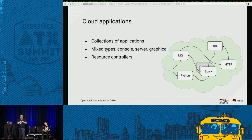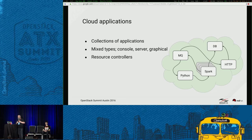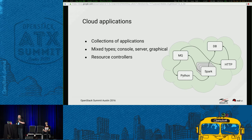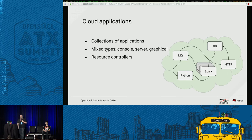When we look at cloud applications, this diagram shows what I think about when putting together an application that lives on the cloud. It's really a collection of applications. There may be mixed types: console applications to inject commands into your pipeline, server applications performing specific data-moving tasks, and graphical applications showing results. You might have a message queue, a database, an HTTP server, a Spark cluster, and some Python applications, all with resource controllers managing what's happening on your stack.